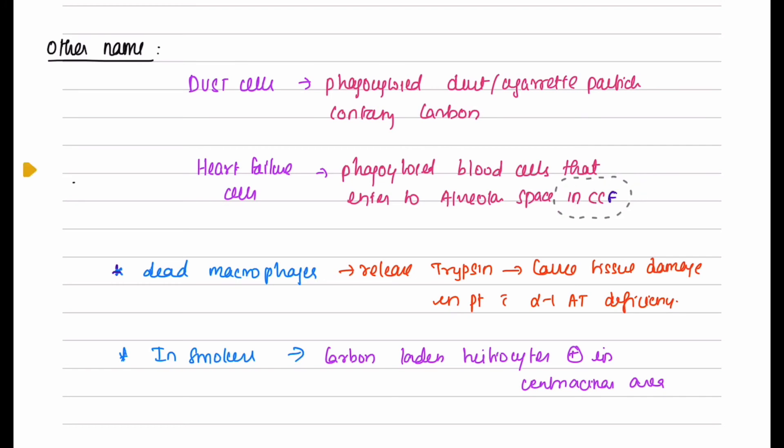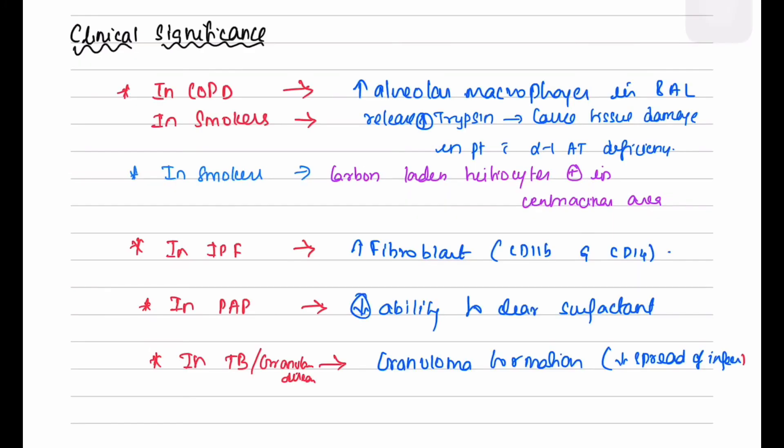Clinical significance: in COPD and in smokers, the BAL shows increased amount of alveolar macrophages and the alveolar macrophages release increased amount of trypsin or elastase which can cause tissue damage, especially in patients with alpha-1 antitrypsin deficiency. In smokers, carbon-laden histiocytes are present in the centrilobular area.